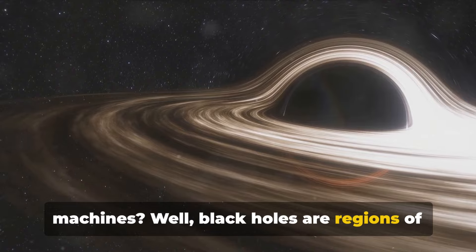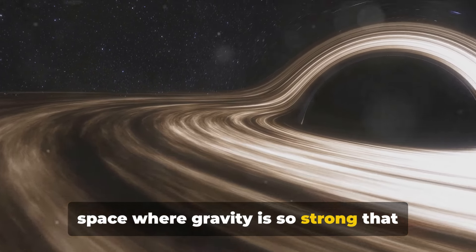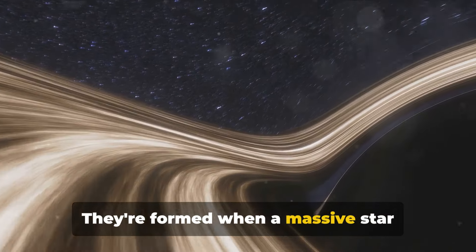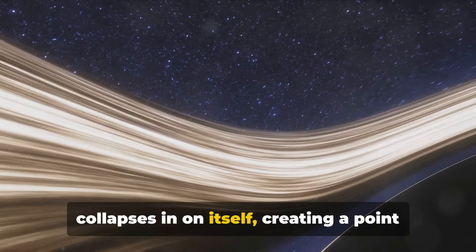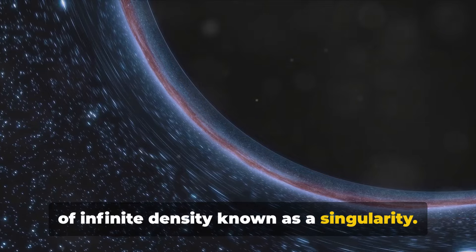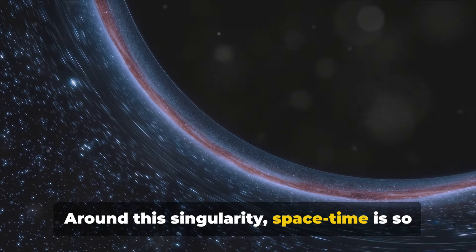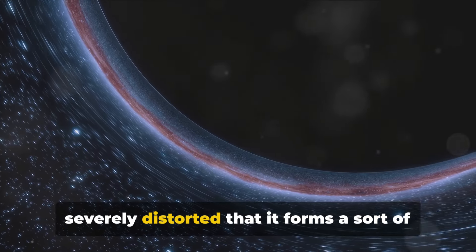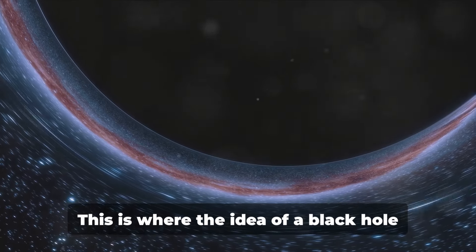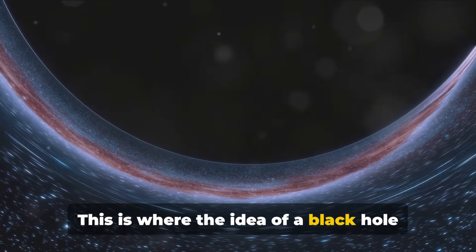But what makes black holes potential time machines? Well, black holes are regions of space where gravity is so strong that nothing, not even light, can escape. They're formed when a massive star collapses in on itself, creating a point of infinite density known as a singularity. Around this singularity, spacetime is so severely distorted that it forms a sort of tunnel through the fabric of the universe. This is where the idea of a black hole being a potential time machine comes from.